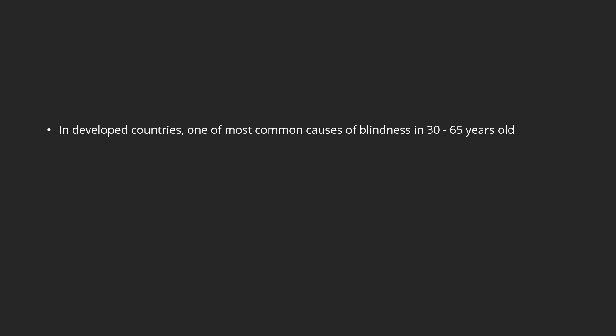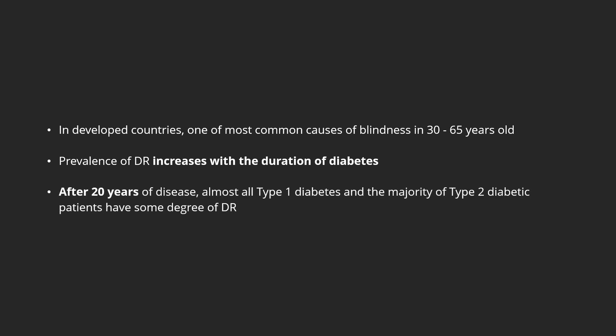Diabetic retinopathy is one of the most common causes of blindness in adults between 30 and 65 years of age in developed countries. The prevalence of diabetic retinopathy increases with the duration of diabetes. Almost all individuals with type 1 diabetes, and the majority of those with type 2 diabetes, will have some degree of diabetic retinopathy after 20 years.